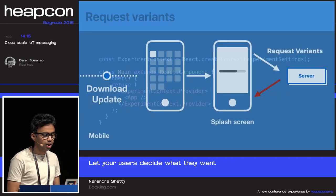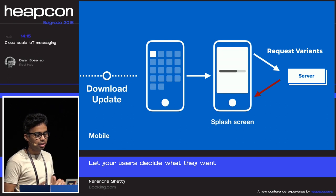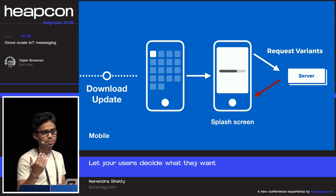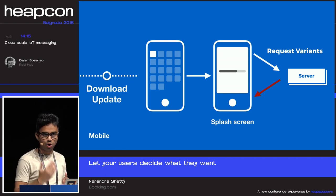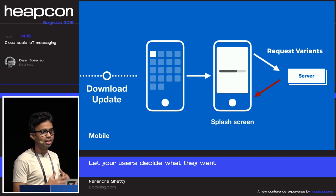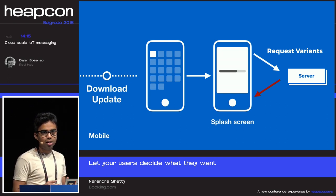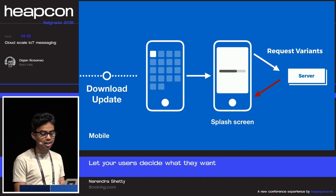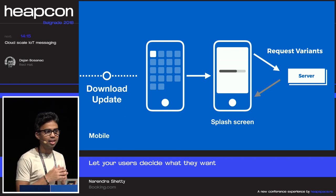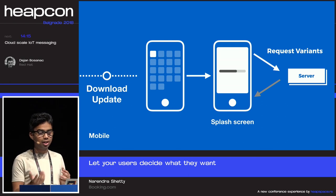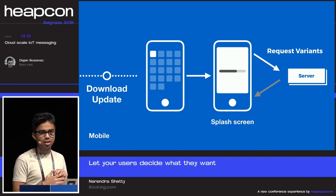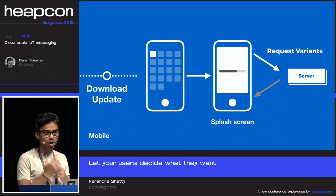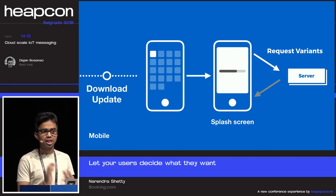If there's a delay from the server or the server is down, you should not hold the user at the splash screen. You fall back to the older version of experiment settings and continue showing the app. Even if the first API call fails — network issue, no internet connection — you still have to go past the splash screen. A/B testing should never stop the user from experiencing your app.